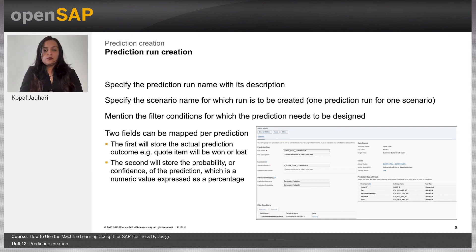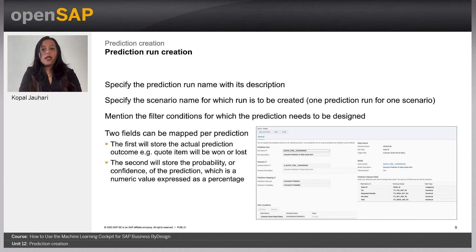You need to mention two extension fields: one for prediction outcome and another for prediction probability, as you can see on the screen. In the prediction outcome field, you store the actual prediction results — for example, whether a quote item is won or lost. In the prediction probability field, you store the probability or confidence of the prediction, which is a numeric value expressed as a percentage.